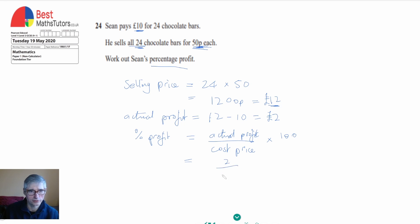The cost price was £10, and that's times 100. 10 goes into 100 ten times, so we've got 2 times 10, which is 20 percent. That's our final answer.